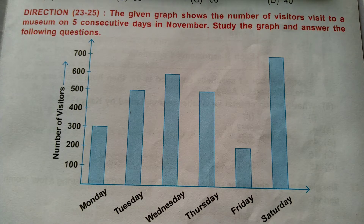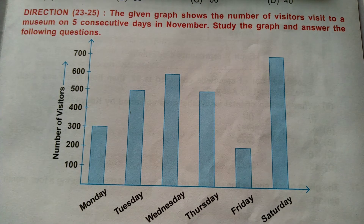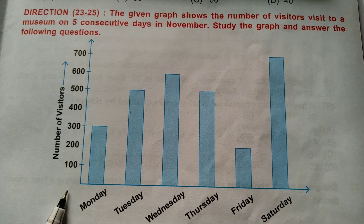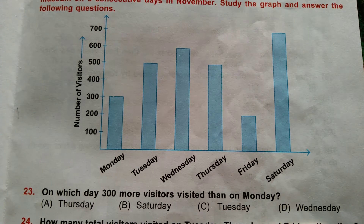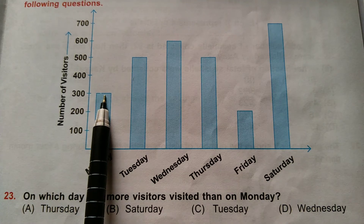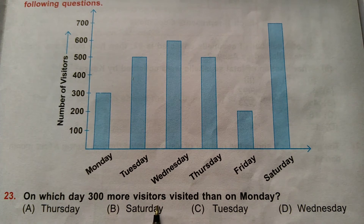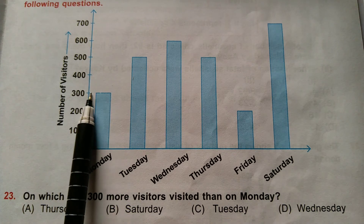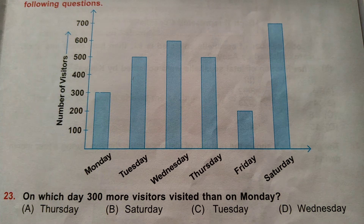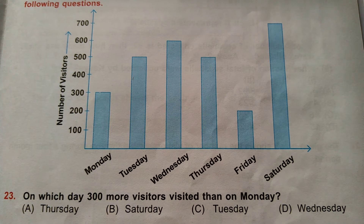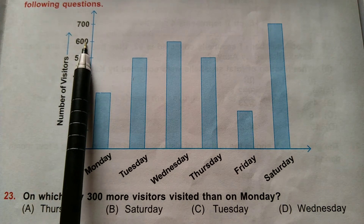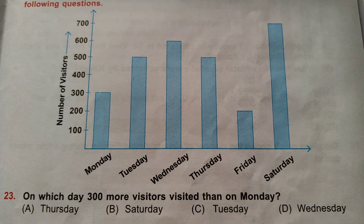Direction is given for question number 23 to 25. The given graph shows the number of visitors who visited a museum on 5 consecutive days in November. Study the graph and answer the following questions. This is a bar graph. The horizontal line shows days and the vertical line shows number of visitors. Question number 23: On which day did 300 more visitors visit than on Monday? There are 300 visitors on Monday. 300 more means 300 plus 300 equals 600. Clearly, 600 visitors visited on Wednesday. Option D is correct.